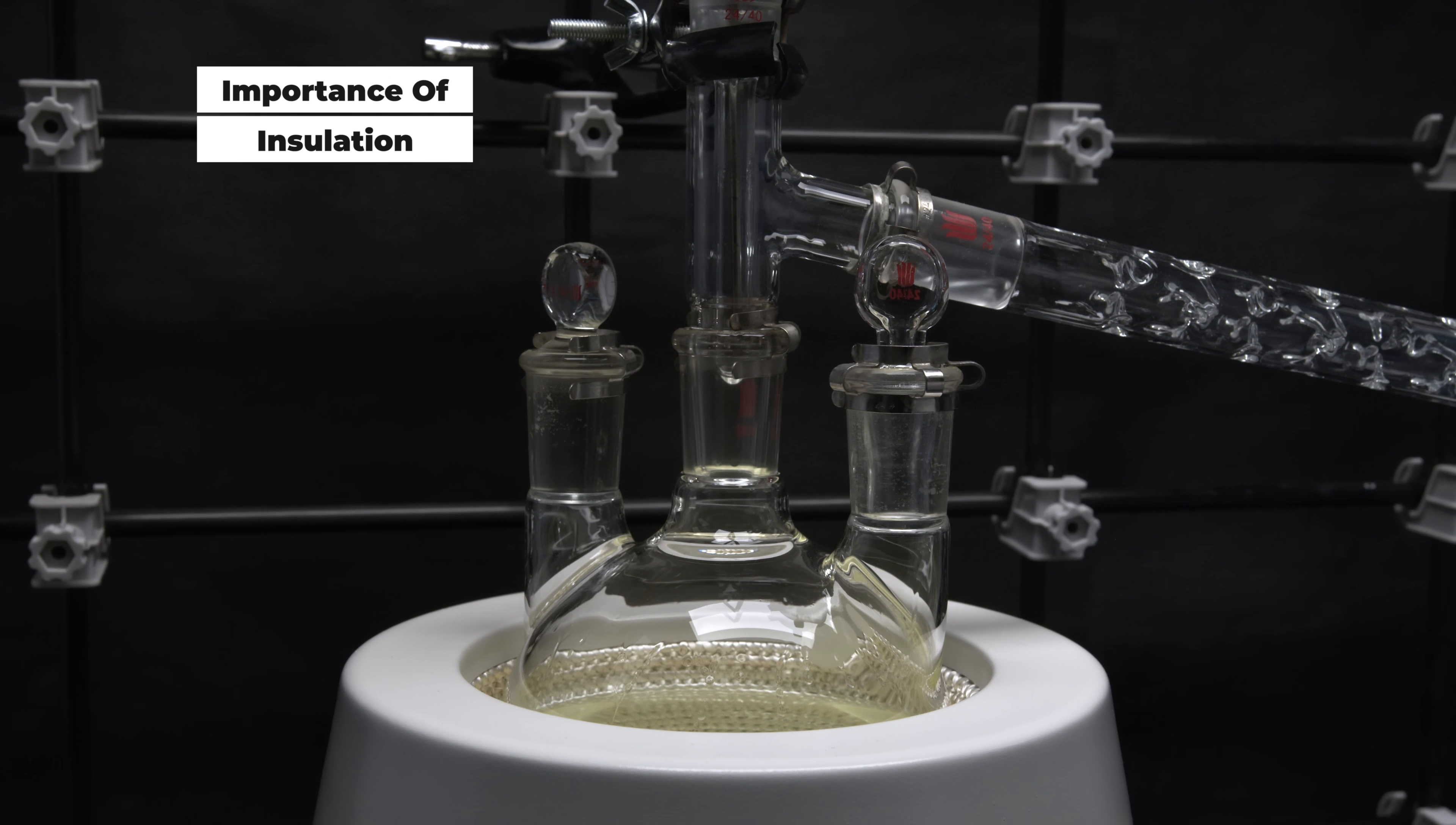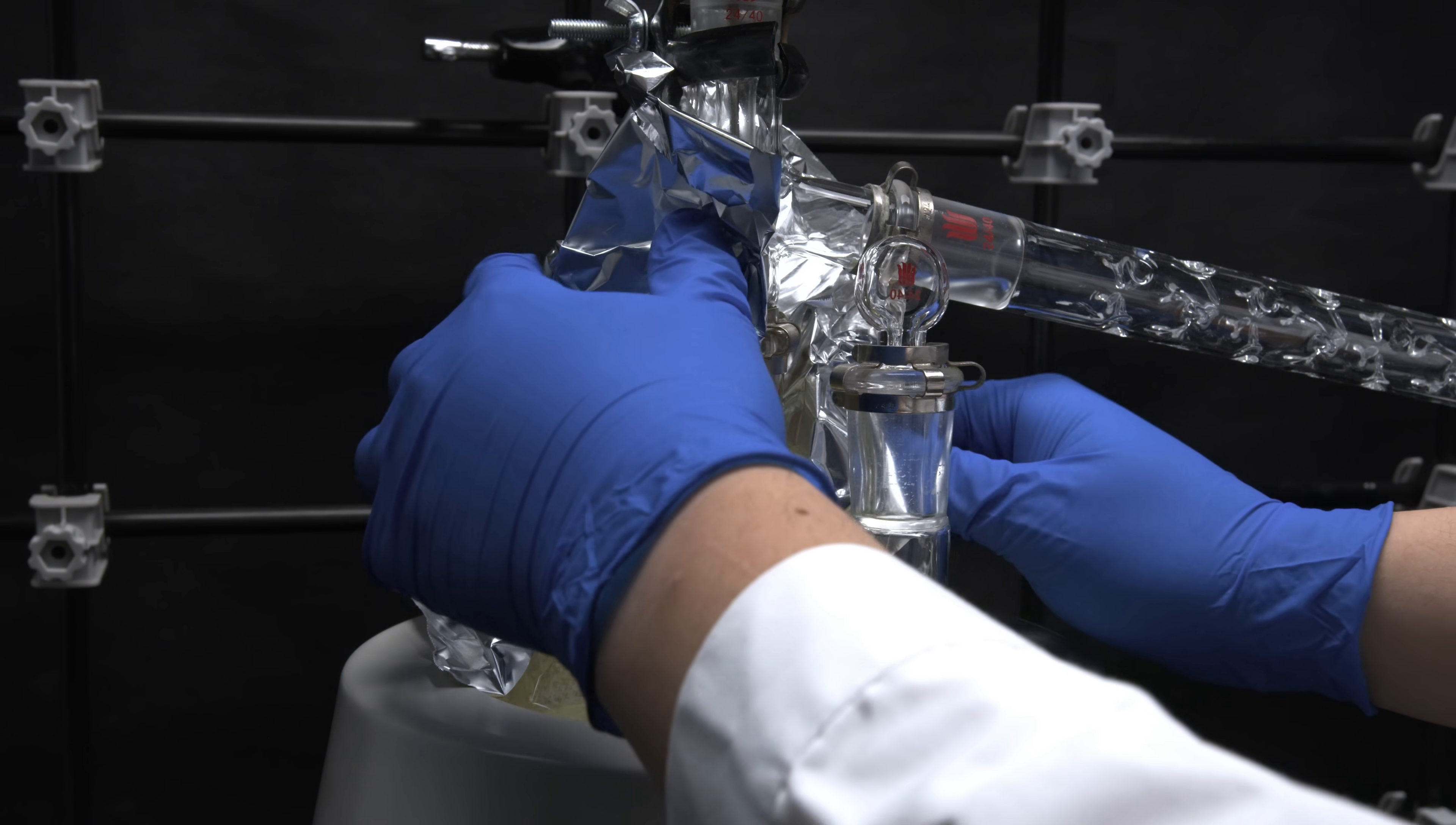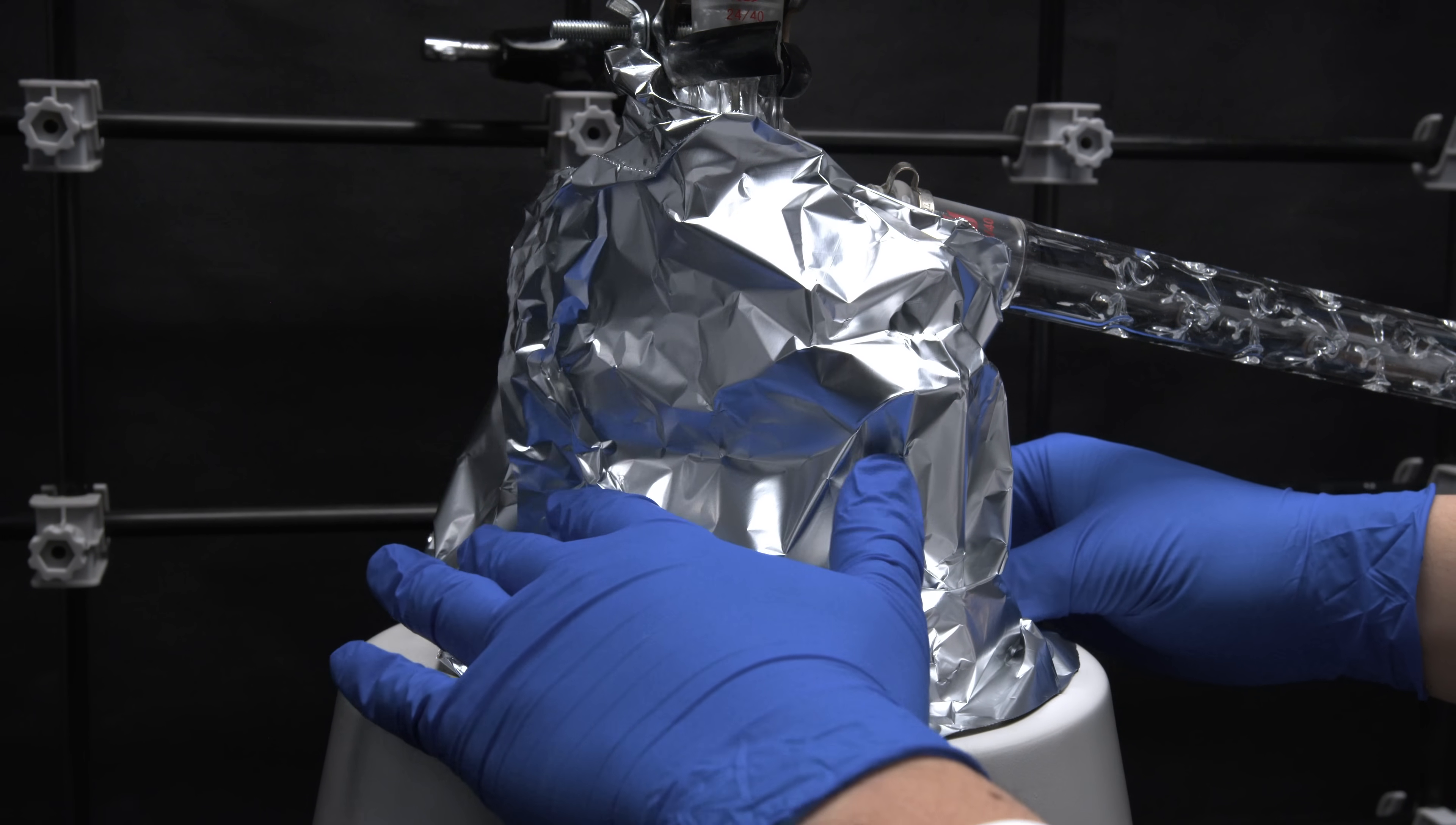It is also mandatory to insulate the distillation setup with aluminum foil, since there is a constant heat loss to the surroundings. And the vapor will struggle to reach the distillation head without the help of insulation. The solution will also potentially build up more superheated points due to the steep temperature gradient, and a flash boil might occur as well, which is really bad.